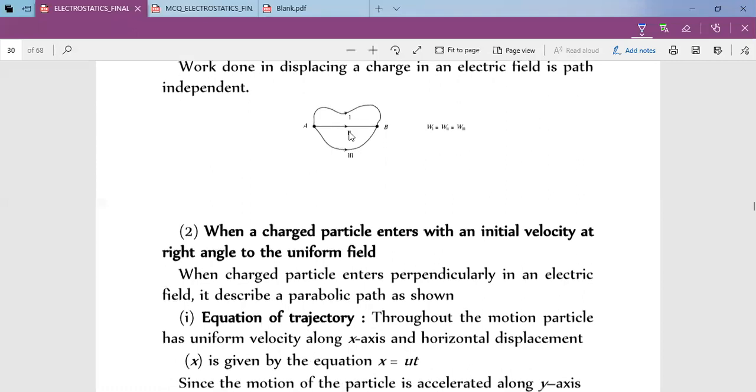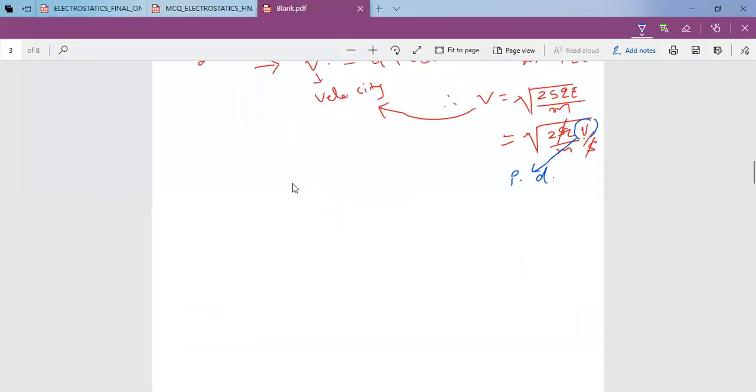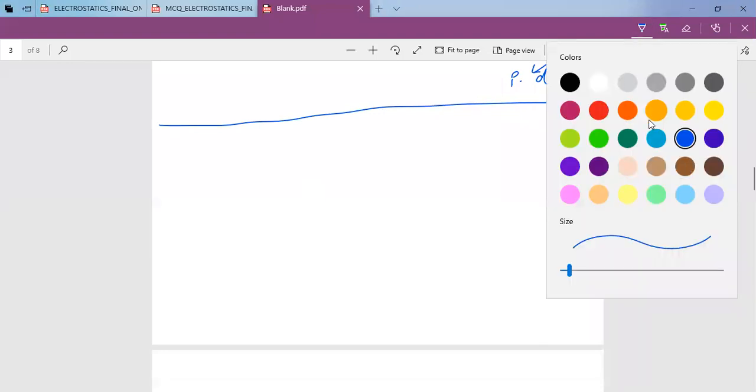Work done, okay. Electrostatic field is a conservative field, so if a charge goes from a to b along path 1, 2, or 3, the work done will be the same. Conservative field means the law of conservation of mechanical energy is applicable. It means you can write initial kinetic energy plus initial potential energy equals final kinetic energy plus final potential energy. Wherever you can write this, it means the field is conservative. In our case, we have three conservative fields: gravitational, electric, and magnetic.